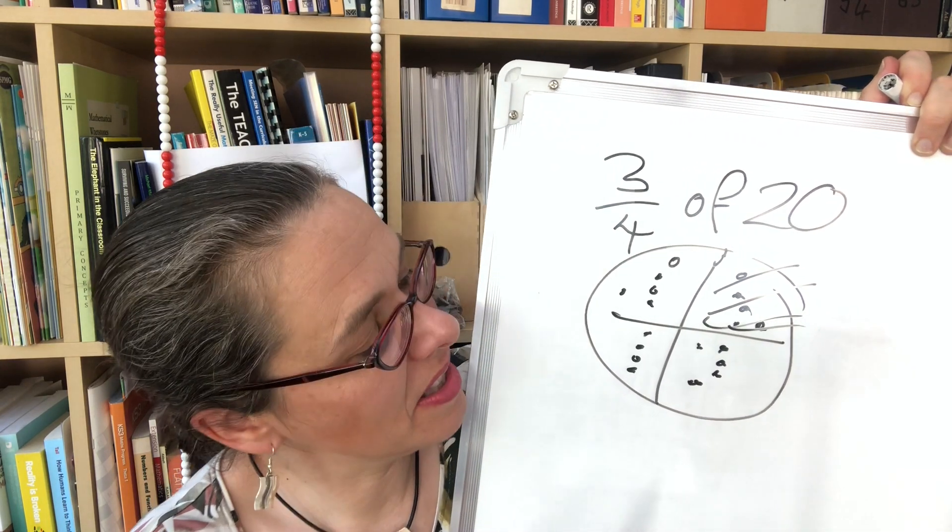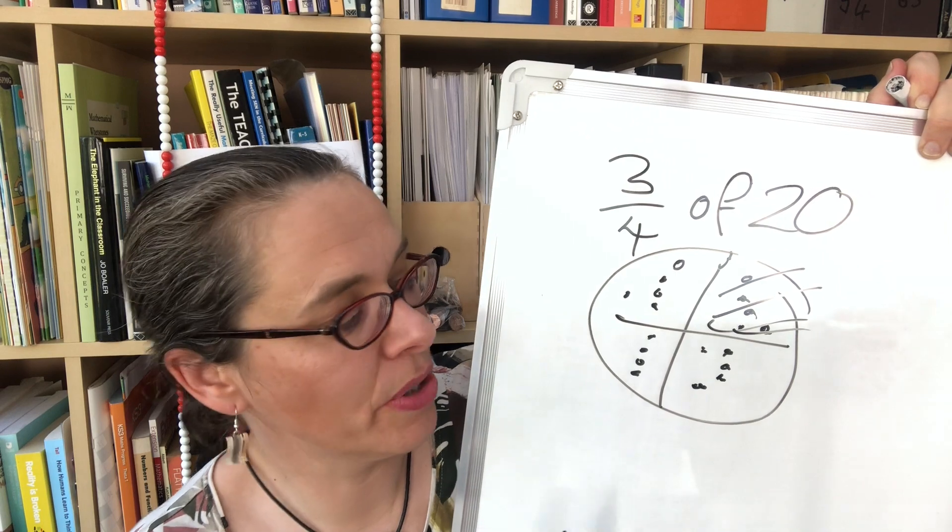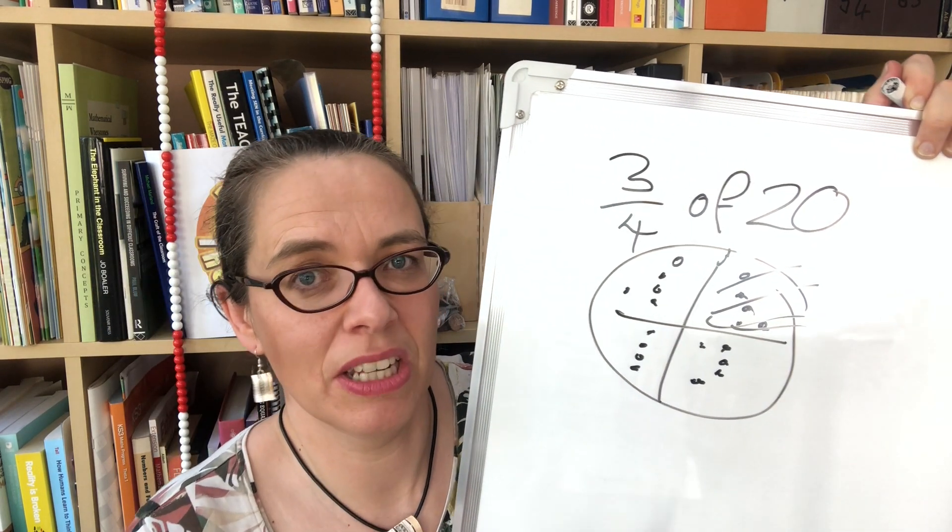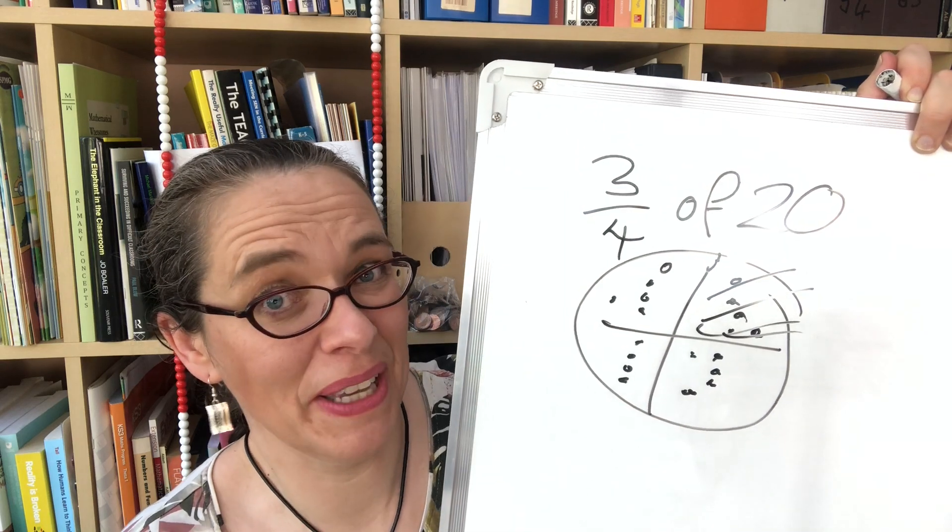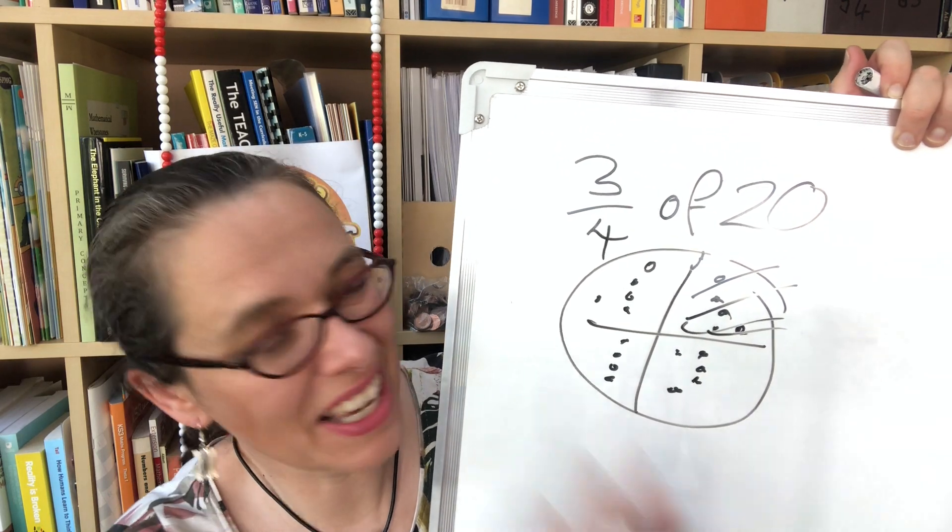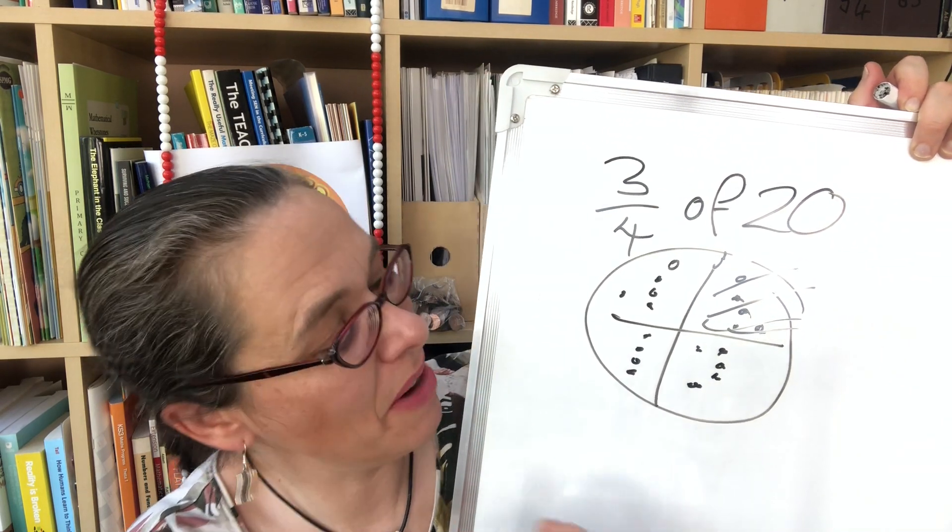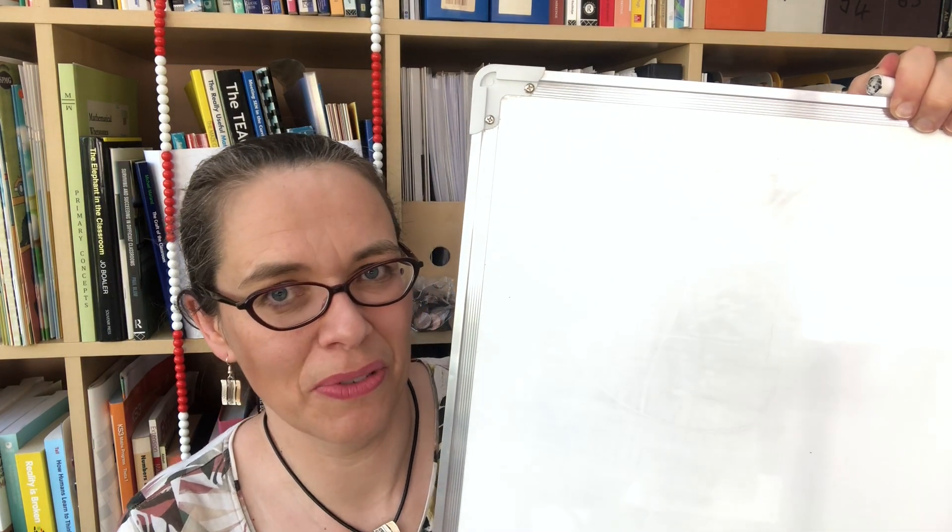It always works but sometimes the circles can be pretty tricky to draw especially if you're working with sevenths or something like that that you don't have pizza parts for. So circles have their limitations but they're a nice introduction so circles your first model you can choose from.